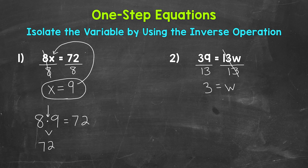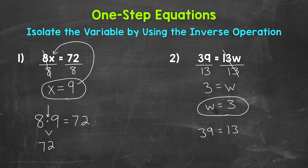So we have w equals, and then on the left side, 39 divided by 13 is 3. So w equals 3. We can rewrite this with the variable coming first. Let's check that solution by plugging 3 in for w in the original equation. So we have 39 equals 13 times 3. 13 times 3 does equal 39. So we have the correct solution. w equals 3.